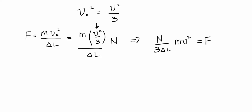Now, mv² can be rewritten by multiplying and dividing by 2: mv² = 2·(½mv²). So the force becomes F = (2/3) · (N/ΔL) · (½mv²), where ½mv² is the average kinetic energy. Since we're using average velocity, this is the average kinetic energy: F = (2/3) · (N/ΔL) · K_avg.